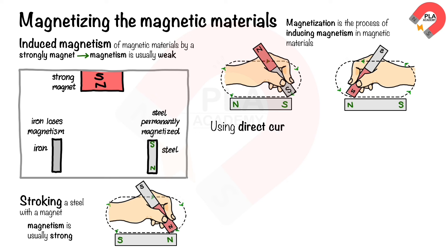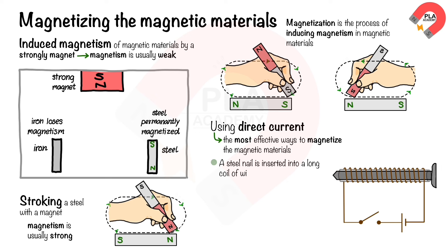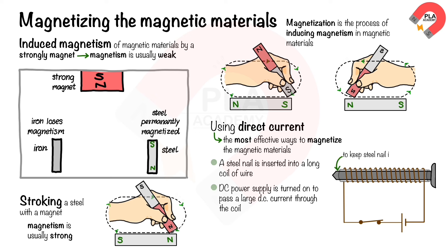Magnetizing using direct current is one of the most effective ways to magnetize a material. A steel nail is inserted into a long coil of wire. The DC power supply is turned on to pass a large direct current through the coil, which generates a magnetic field that magnetizes the steel. One end becomes the north pole and the other becomes the south pole.